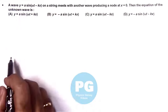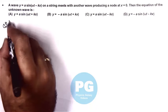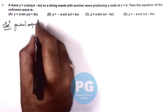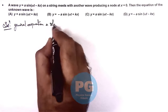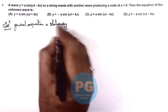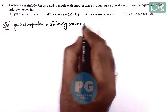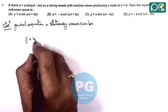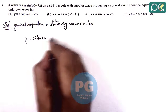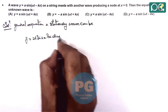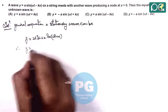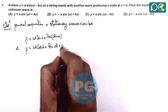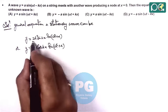In theory, we already discussed the general equation of a stationary wave. There are two possible cases: one is y = 2a·sin(kx)·sin(ωt + α), or this can be y = 2a·cos(kx)·sin(ωt + α). This is the standard way we write stationary wave equations.